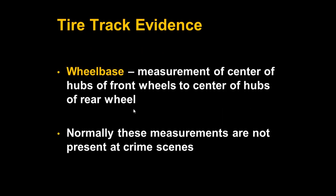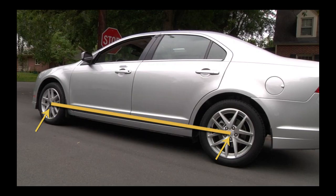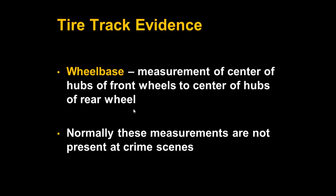Another important measurement to take from tire tracks when available is the wheelbase. This measurement is taken from the center of the hubs of the front wheels to the center of the hubs of the rear wheels. Unfortunately, all of the points needed to make this measurement are rarely available at an accident or crime scene. The times when this might be available are when the car is parked in snow or rain where you could clearly see where the bottoms of all four tires were.